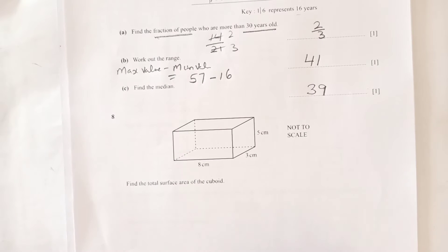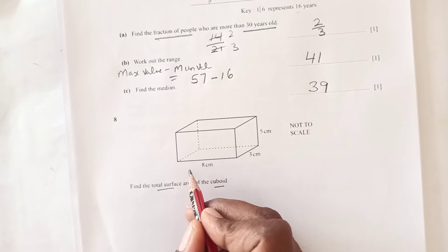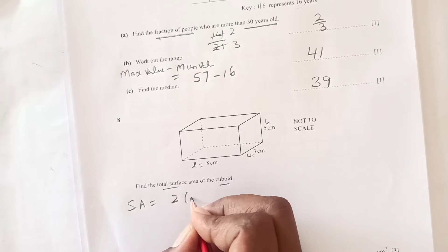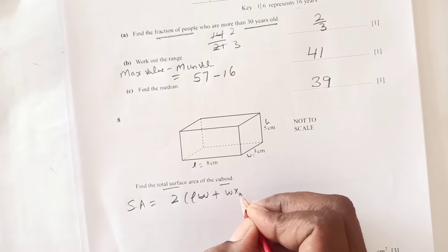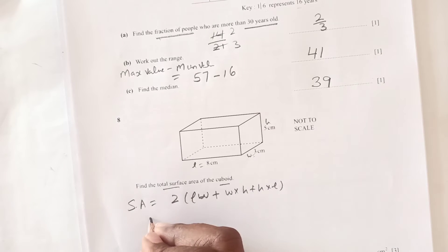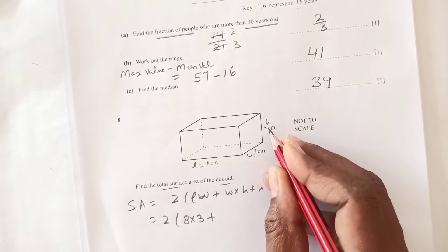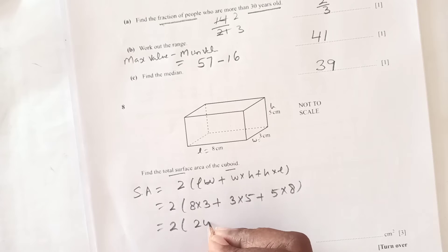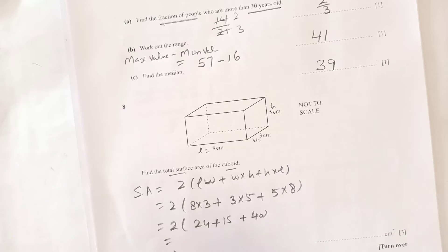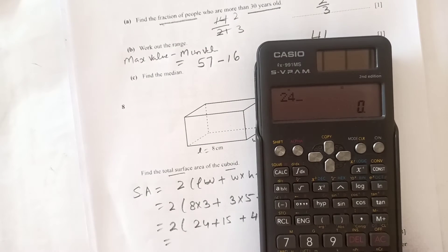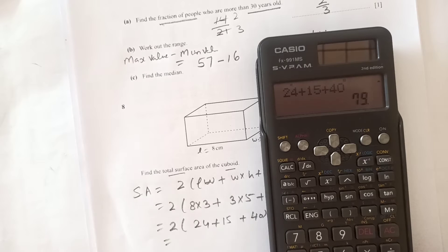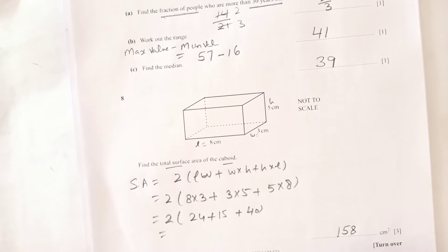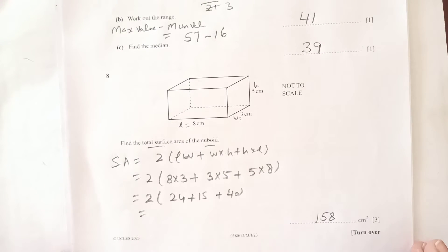Number 8: find the total surface area of the cuboid. Surface area formula is 2 times (length times width plus width times height plus height times length). So 2 into (8 times 3, then 3 times 5, then 5 times 8). That's 2 times (24 plus 15 plus 40), which is 158 centimeter squared.